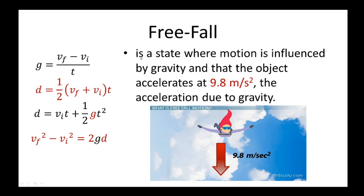Free fall is a state where motion is influenced by gravity only, and the object accelerates at 9.8 meters per second squared. Anything that falls with no air resistance — or where air resistance is negligible, meaning nearly zero — is falling due to the influence of gravity alone, and should accelerate at 9.8 meters per second squared.